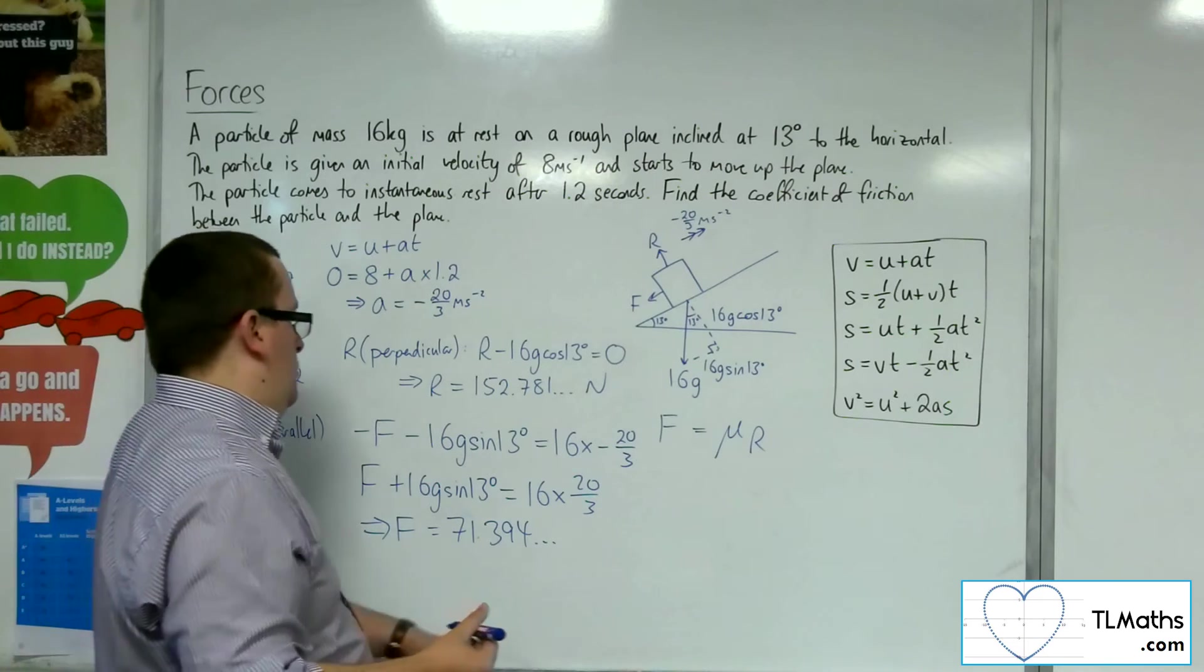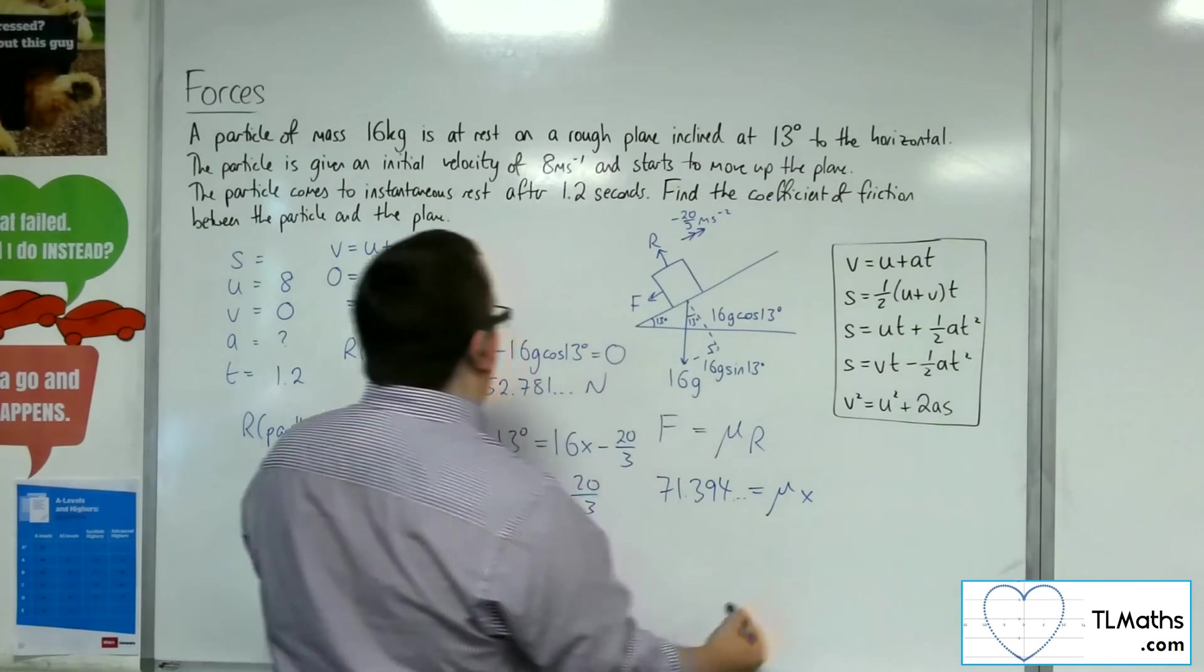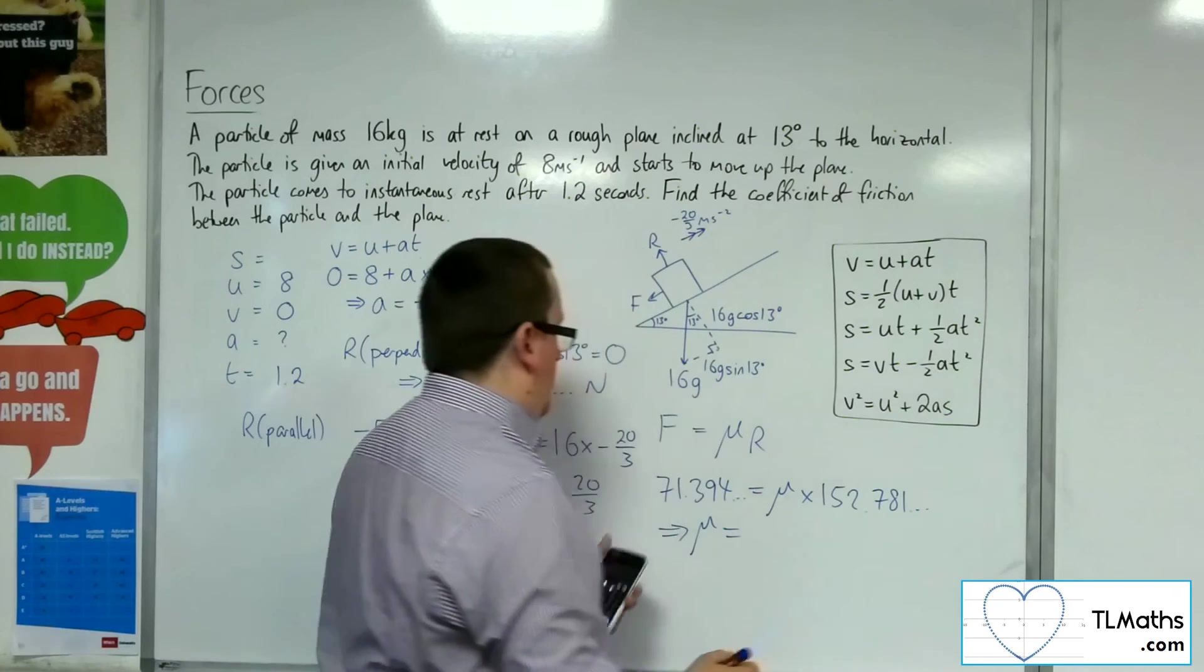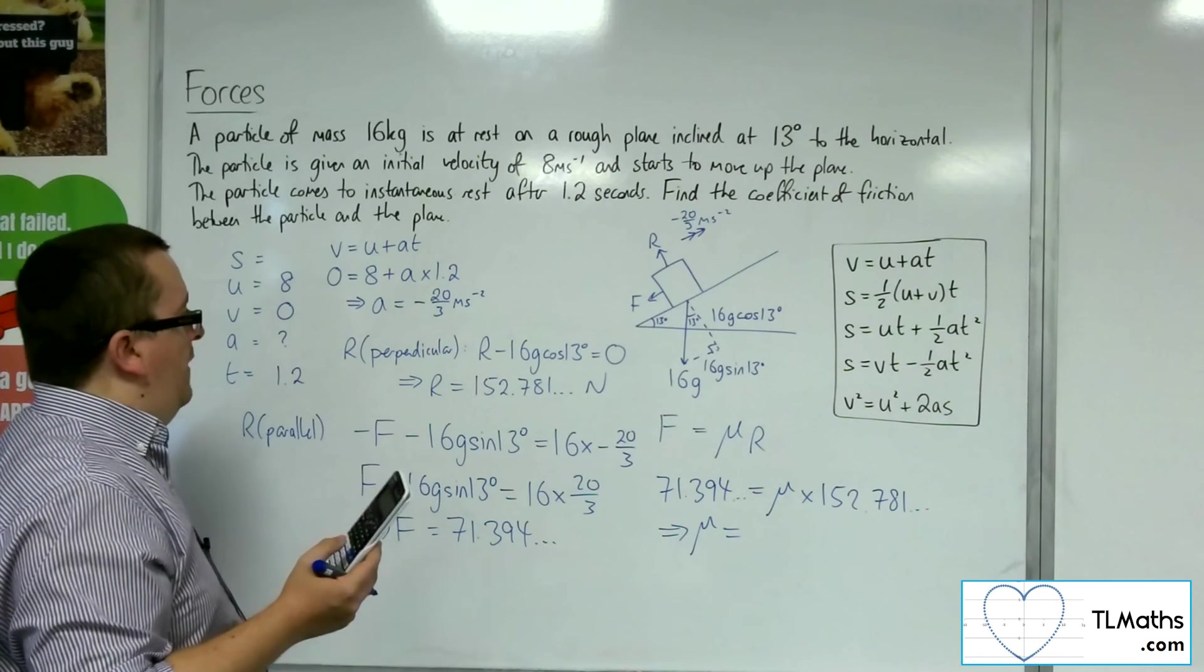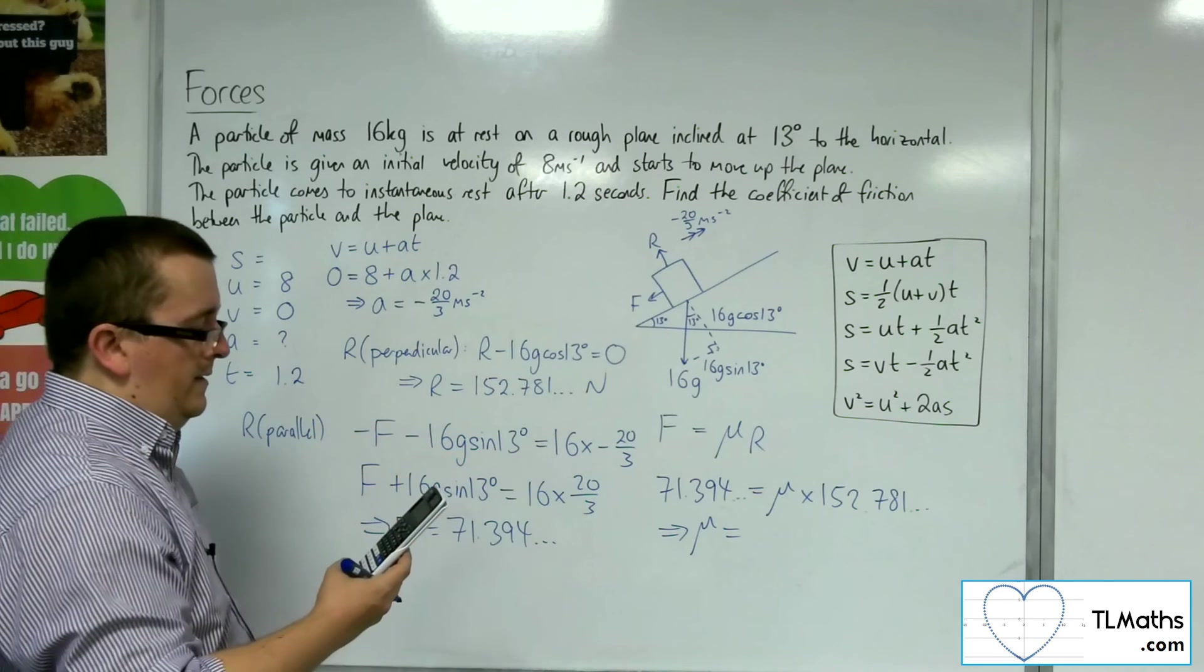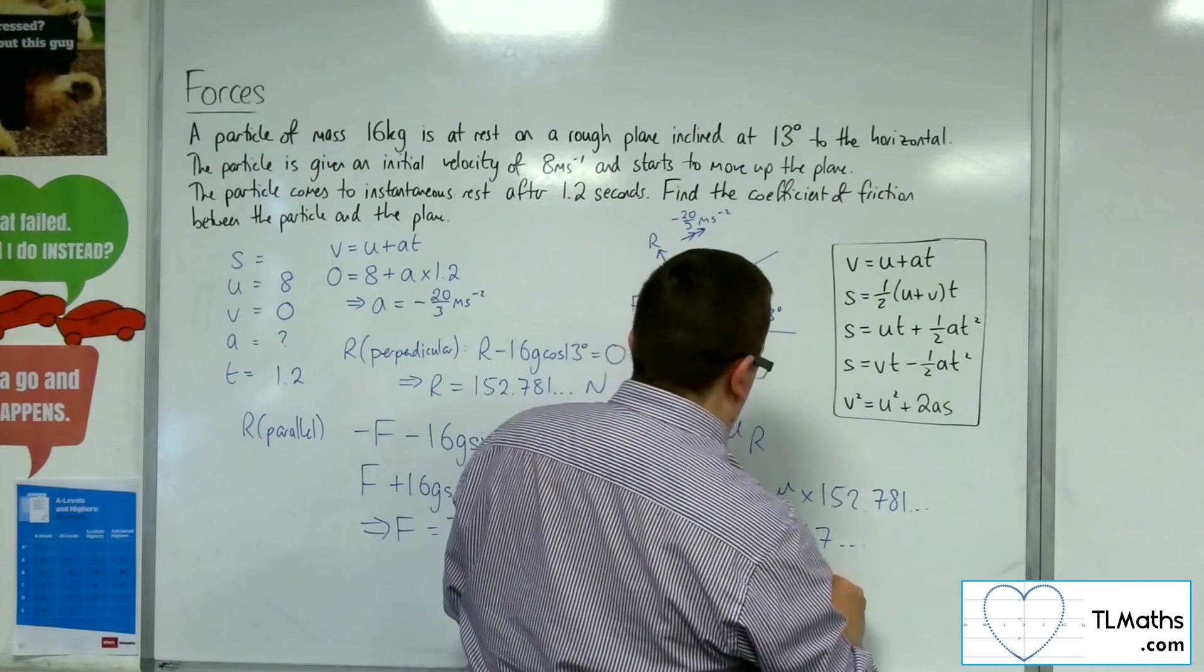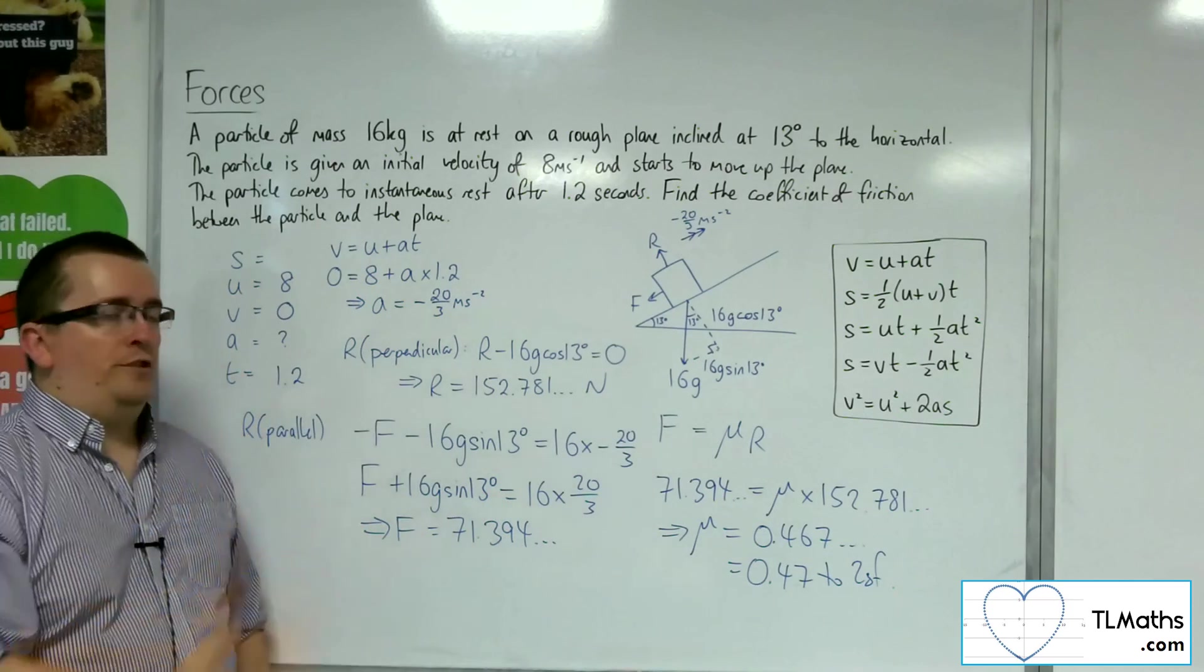I've got my frictional force is equal to mu times the normal reaction force. I've still got that number on my calculator but I don't have the previous one, so I'm going to divide it by 16 times 9.8 times cos of 13, using the result that I had. That gets me 0.467, so 0.47 to 2 sig fig. So that is my coefficient of friction.